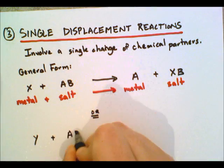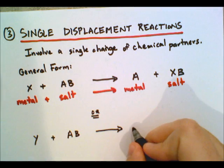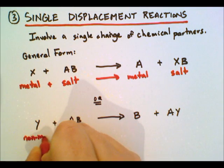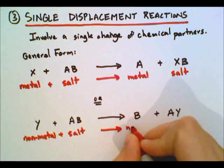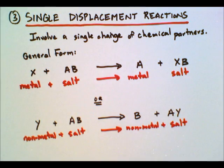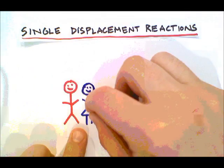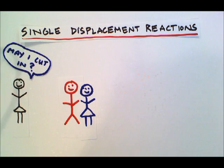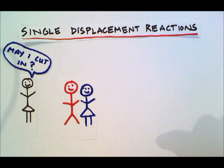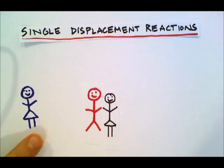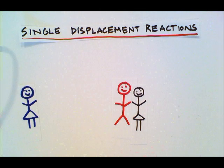Another type of single displacement in the second form is where you have one substance Y reacting with AB, producing B and AY. So we've got a non-metal reacting with our salt, creating a new non-metal and a new salt. Going back to our dancing partners: here's our couple, and another female comes along who wants to cut in. The female switches places, so now the male is dancing with a new partner — that's our single displacement reaction where one person was displaced with another.